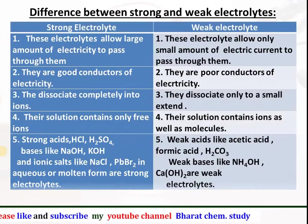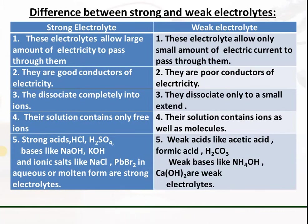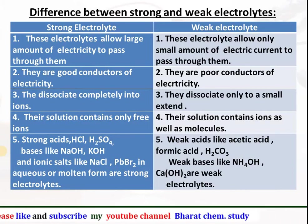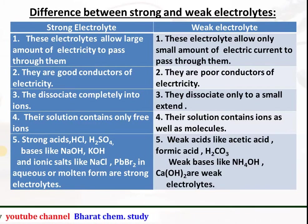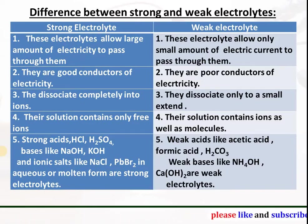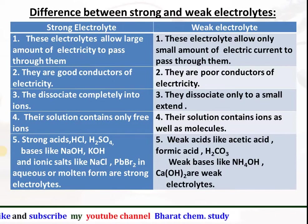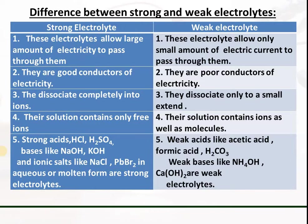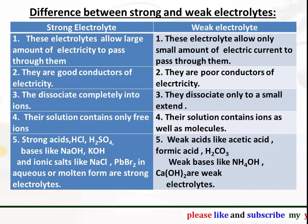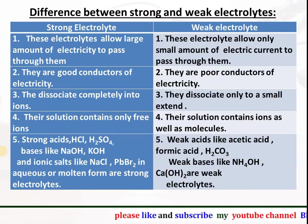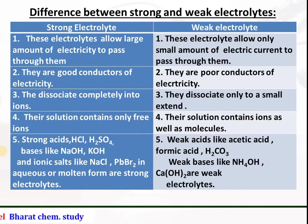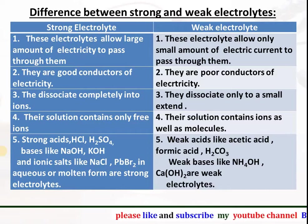Difference between strong and weak electrolytes: Strong electrolytes allow a large amount of electric current to pass through them, whereas weak electrolytes allow only a small amount. Strong electrolytes are good conductors of electricity whereas weak electrolytes are poor conductors. Strong electrolytes dissociate completely into ions whereas weak electrolytes dissociate only to a small extent. The solution of strong electrolytes contains only free ions, whereas the solution of weak electrolytes contains ions as well as molecules — this fourth point is very important. Strong electrolytes include strong acids like HCl and sulfuric acid, bases like NaOH and KOH, and ionic salts like NaCl and PbBr2. Weak electrolytes include weak acids like acetic acid, formic acid, and carbonic acid, and weak bases like ammonium hydroxide and calcium hydroxide.